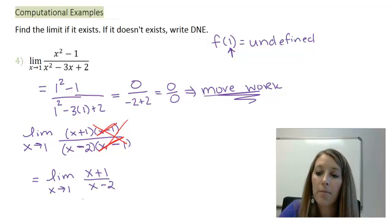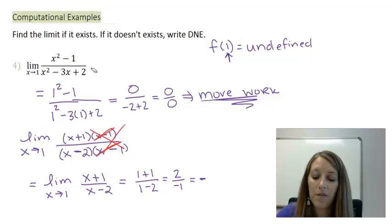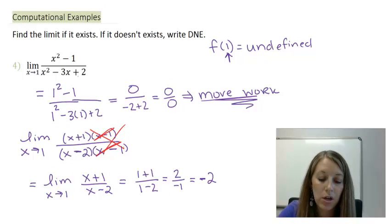So this is equivalent to the limit as x is approaching 1 of x plus 1 over x minus 2. I start my steps over. I plug in my x value here and I see what happens. On the top, I have 1 plus 1. On the bottom, I have 1 minus 2. That gives me 2 over negative 1, which simplifies to negative 2. So my official answer here, the limit as x approaches 1 of this function is negative 2.